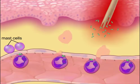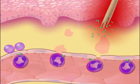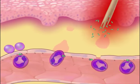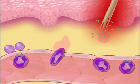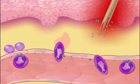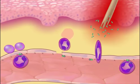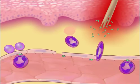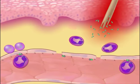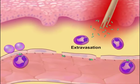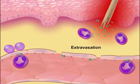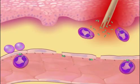The neutrophils now undergo dramatic changes in shape and squeeze through the endothelial wall into the interstitial tissue fluid. This process is called extravasation.